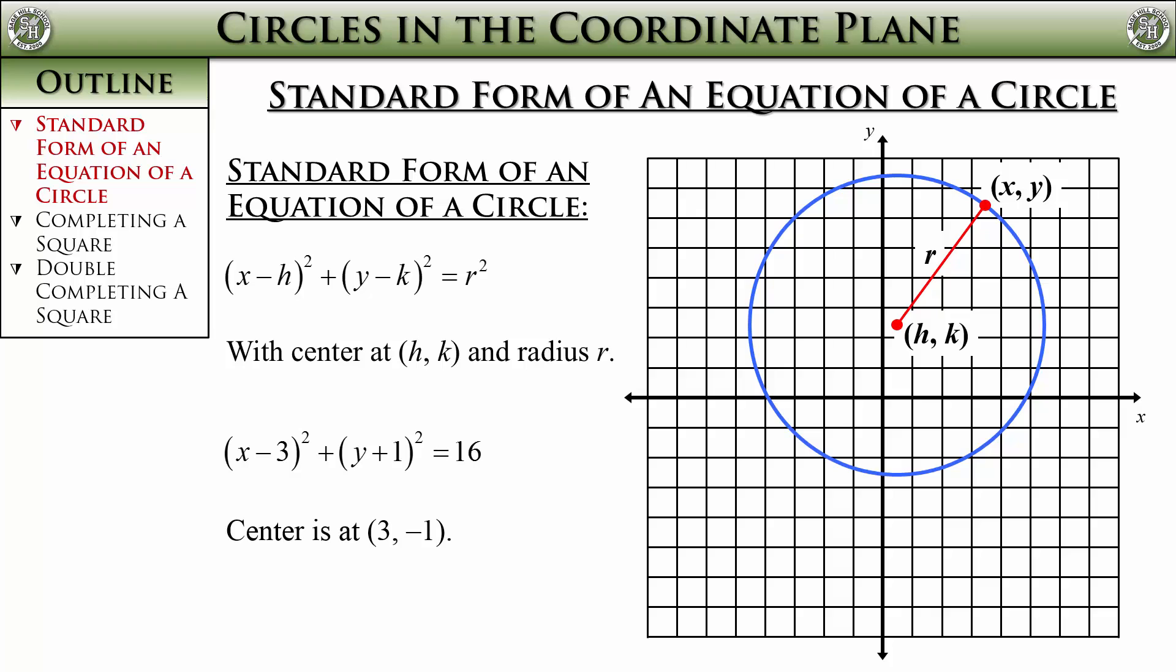The second thing to note is to make sure you realize that the equation has the radius squared. So for this example equation, you need to take the square root of 16 in order to get that the radius of this circle would be 4. Those are the two main things to be careful of: flip the signs to get the center of the circle, and take the square root to get the radius.